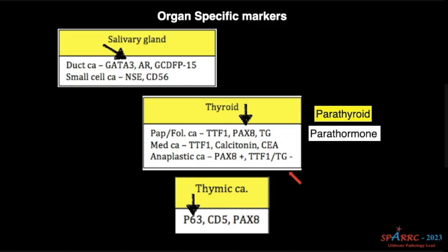For salivary gland ductal carcinoma, there may be quite a number of markers but I am going to highlight only one marker that will be helpful: GATA3, very nicely positive for ductal cells. For small cell carcinoma, what I have written NSE and CD56 is replaced by INSM1, which I will be talking about in a minute. For thyroid carcinoma, it is PAX-8. For medullary carcinoma thyroid, it is calcitonin.